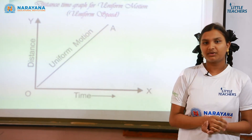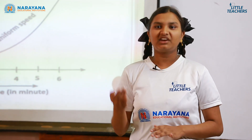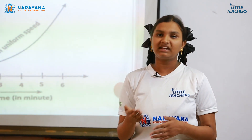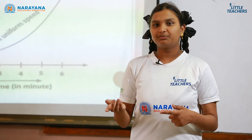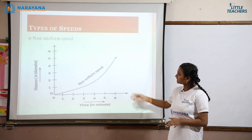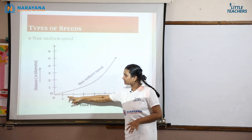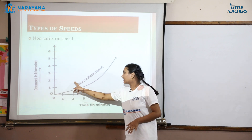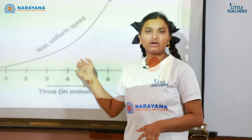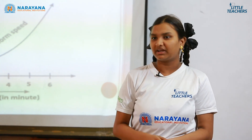Next, non-uniform speed: a body covers unequal distance in equal intervals of time. The speed every second is variable compared to the previous second. This graph shows non-uniform speed because the speed changes every second — in the first second it travelled 1 meter, in the second second it travelled 2 meters, but in the third second it travelled 4 meters. So the speed is not constant, making this an example of non-uniform speed.